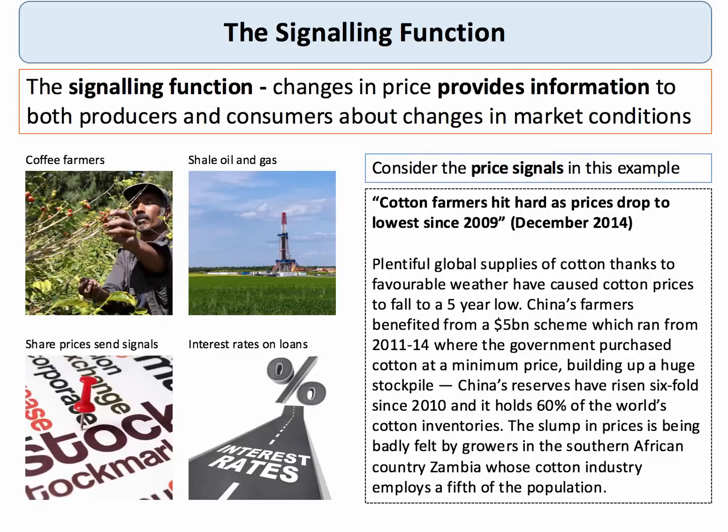The signalling function is probably the most important aspect of the price mechanism. Prices perform a signalling function — prices adjust to demonstrate where resources are required and they rise and fall to reflect scarcity and surpluses. When prices are rising, maybe that's because of high demand from consumers; that's a signal to suppliers perhaps to expand production to meet demand.